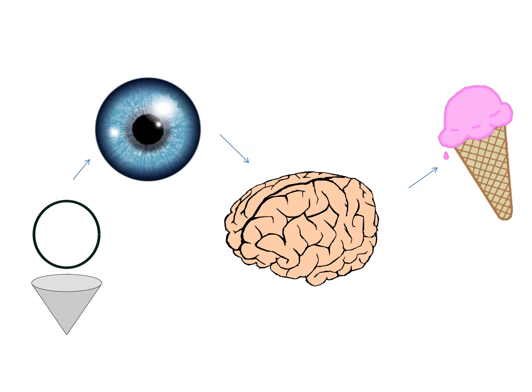Visual information is relayed to our brains, which helps us to identify objects and give them meaning. We are then able to create a memory of the image and give it a context. An example of this is when we see a round object in a cone — we know it's an ice cream and not a ball.